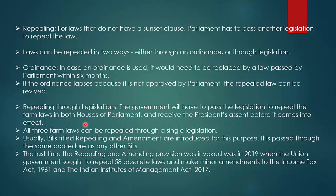For laws that do not have a sunset clause, parliament has to pass another legislation to repeal the law, which the government will do in the winter session. Laws can be repealed in two ways: either through an ordinance or through legislation. In case an ordinance is used, it would need to be replaced by a law passed by parliament within six months. If the ordinance lapses because it is not approved by parliament, the repealed law can be revived.